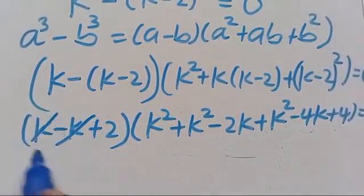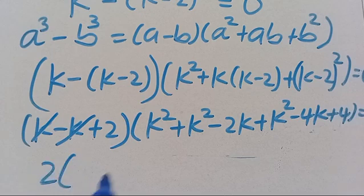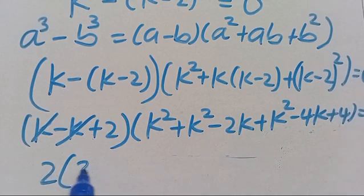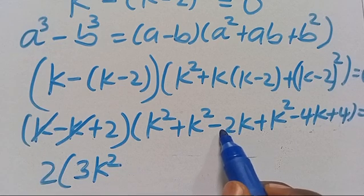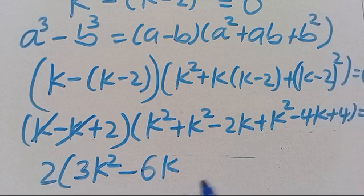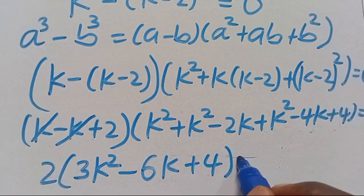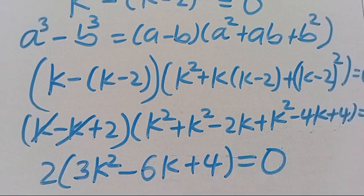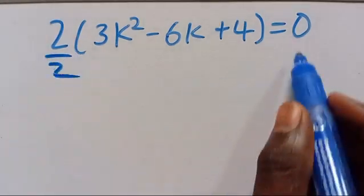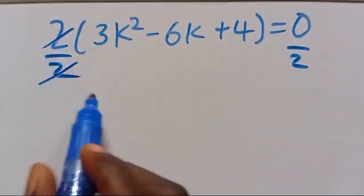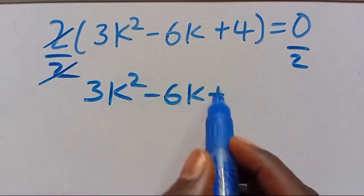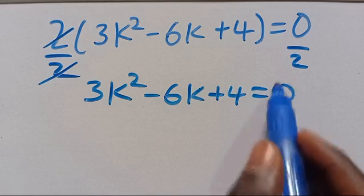Simplifying: we take away terms and are left with 2 here. Then K squared plus K squared gives 2K squared, plus K squared gives 3K squared, then minus 2K minus 4K gives minus 6K, then plus 4, equals 0. Dividing through by 2, we cancel and are left with 3K squared minus 6K plus 4 equals 0.